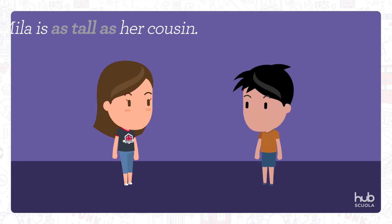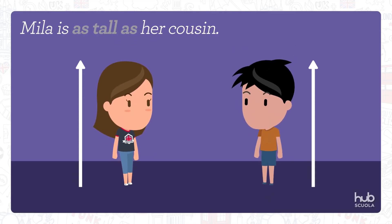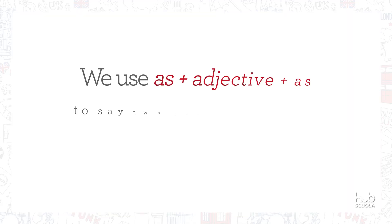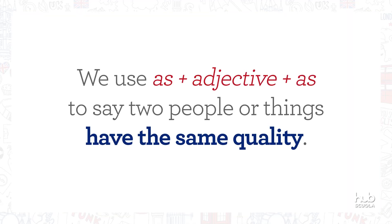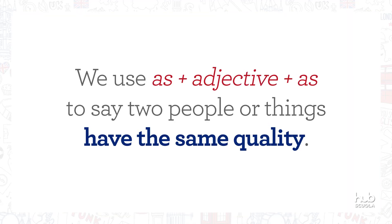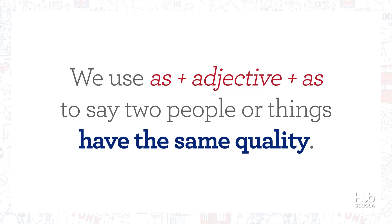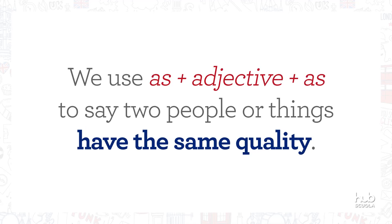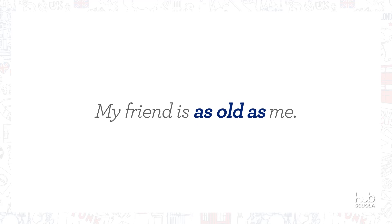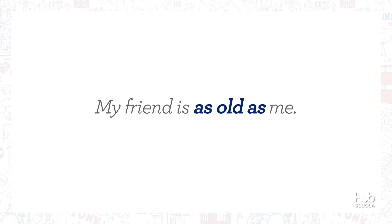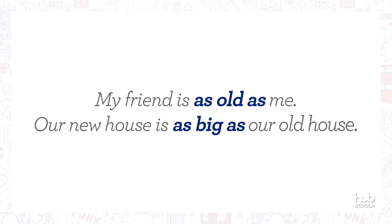Mila is as tall as her cousin. We use 'as' plus adjective plus 'as' to say two people or things have the same quality. For example, my friend is as old as me. Our new house is as big as our old house.